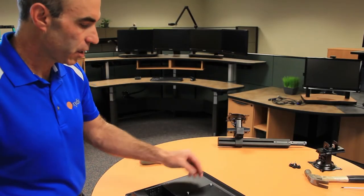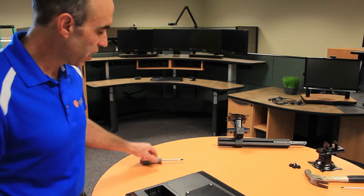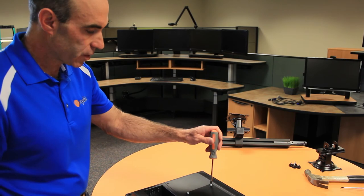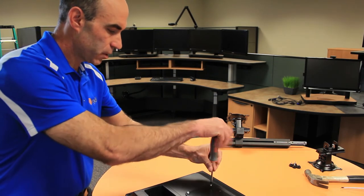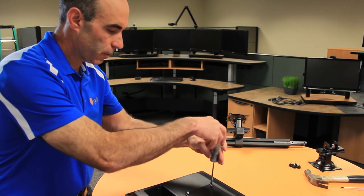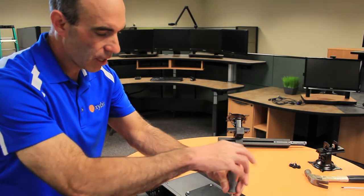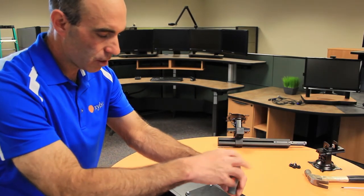Once I've got the screws started, you can see that everything's kind of in place. Then I'm just going to take a number two Phillips screwdriver and I'm going to tighten those down real quick. I'll do it basically corner to corner. That way it'll make the monitor align correctly.